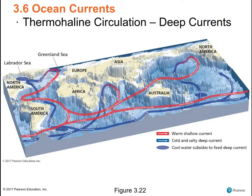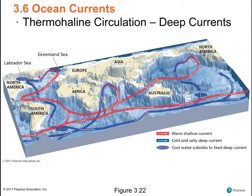These are deep currents — thermohaline circulation. Thermo refers to heat, haline refers to salt. These are deep ocean currents driven by differences in temperature and density. Warm water flows along the surface, gives up its heat, gets cold and more dense, then sinks, flows along the bottom of the ocean, rises to the surface, picks up heat, dumps heat, and sinks again. A complete circuit can take thousands of years because of the enormous scale. There's concern this circulation might be slowing as cold, fresh water from melting Greenland ice reduces sinking — it would be ironic if thermohaline circulation stopped due to global warming, putting Europe into a mini ice age.